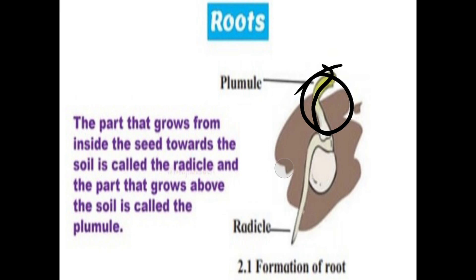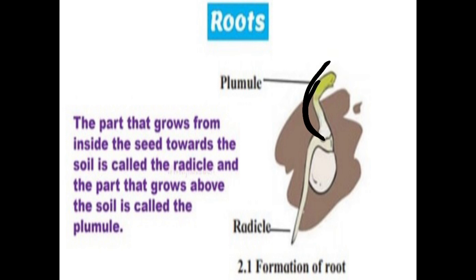The upper-most part of the seed that grows above the soil is known as the plumule. Jo upper wala part hai sprouting seed ka, usse hum plumule kehenge. So the lower part is the radicle and the upper part is the plumule. Understood the definitions of plumule and radicle.